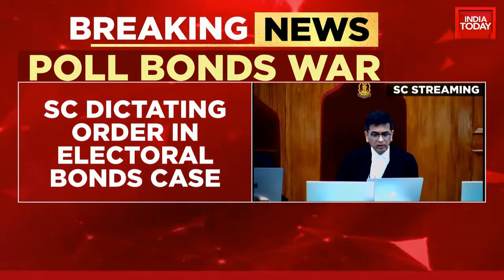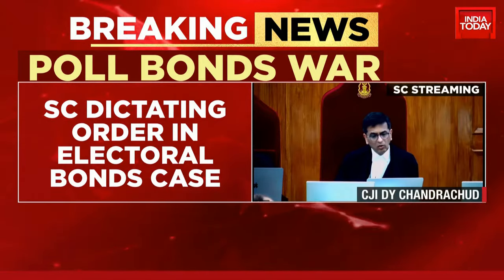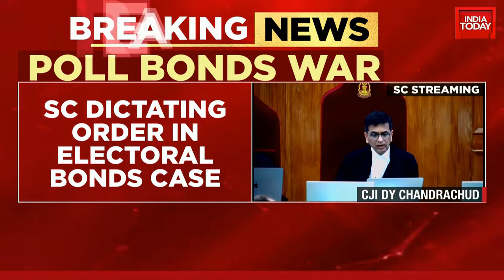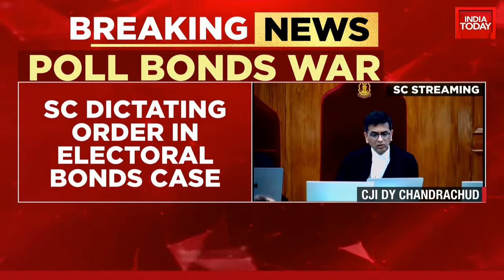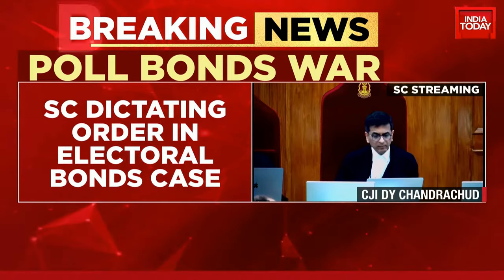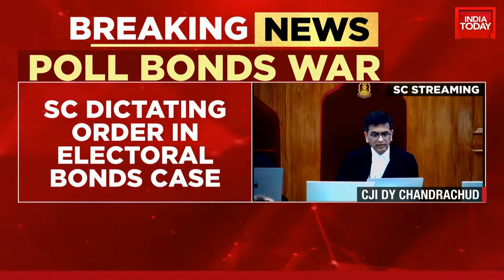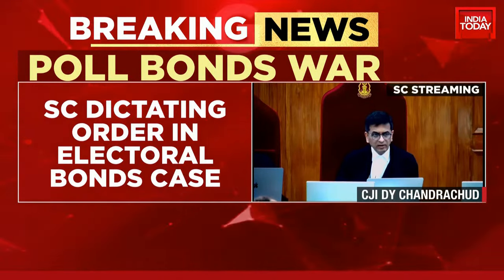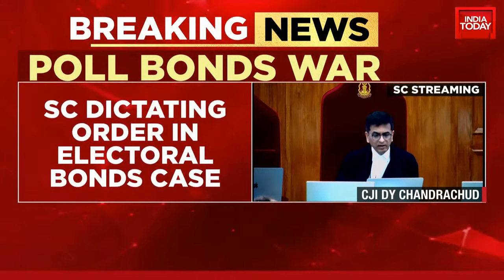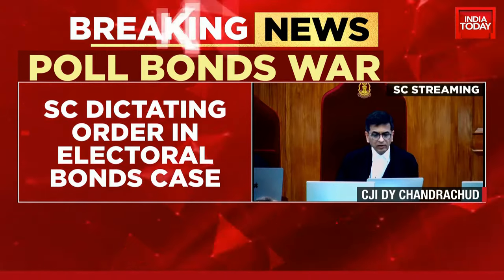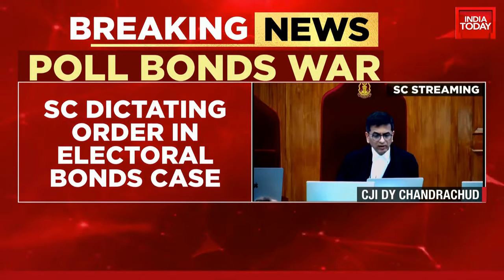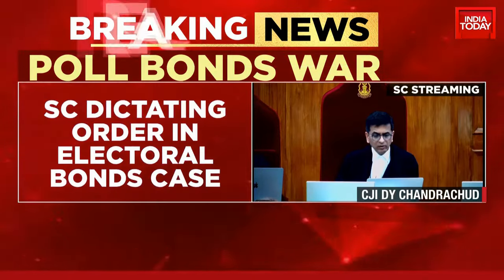The court directed the disclosure of information on contributions received by political parties under the electoral bond scheme, to give logical and complete effect to the ruling. In paragraph 219, this court issued operative directions. These directions in subparagraph B and C are in two parts. The first part requires SBI to submit details of the electoral bonds purchased since the interim order dated 12 April 2019, till date to the ECI.